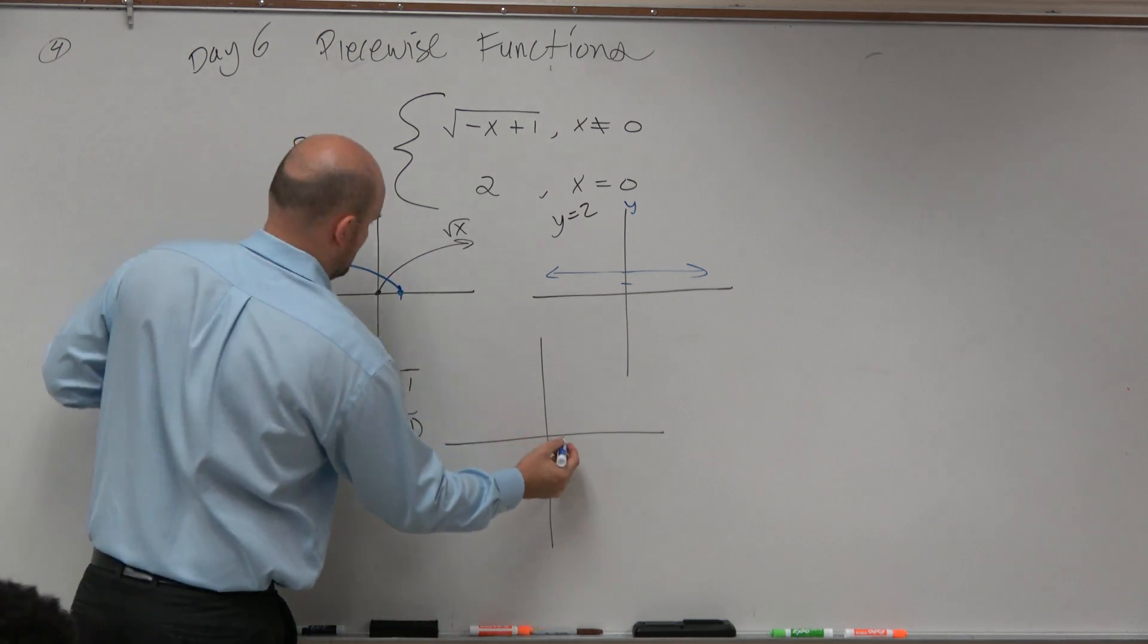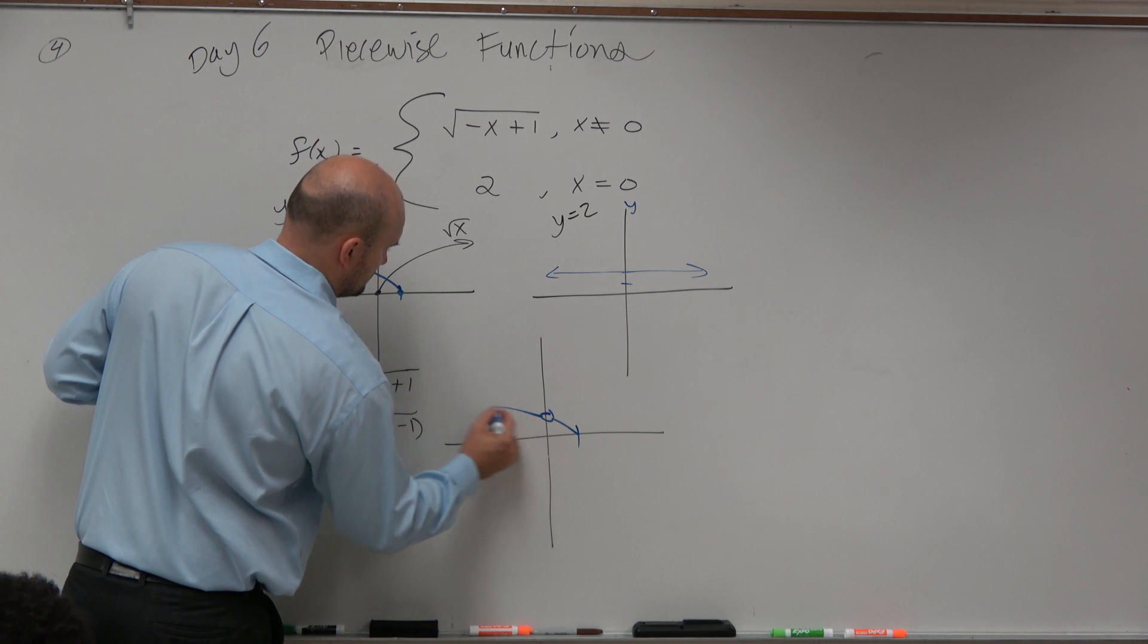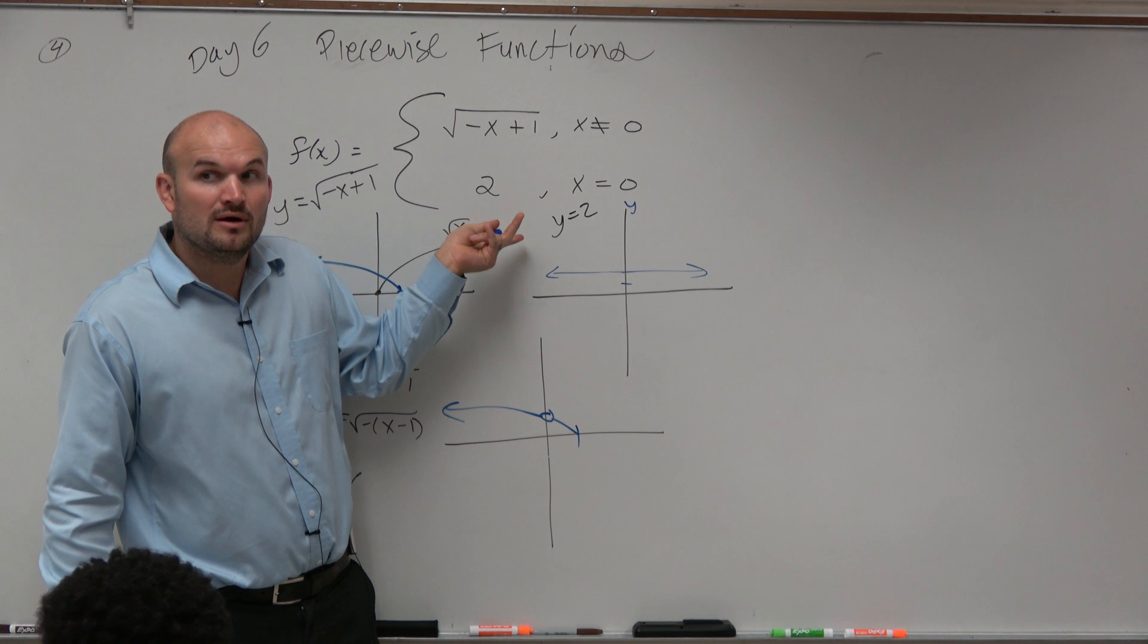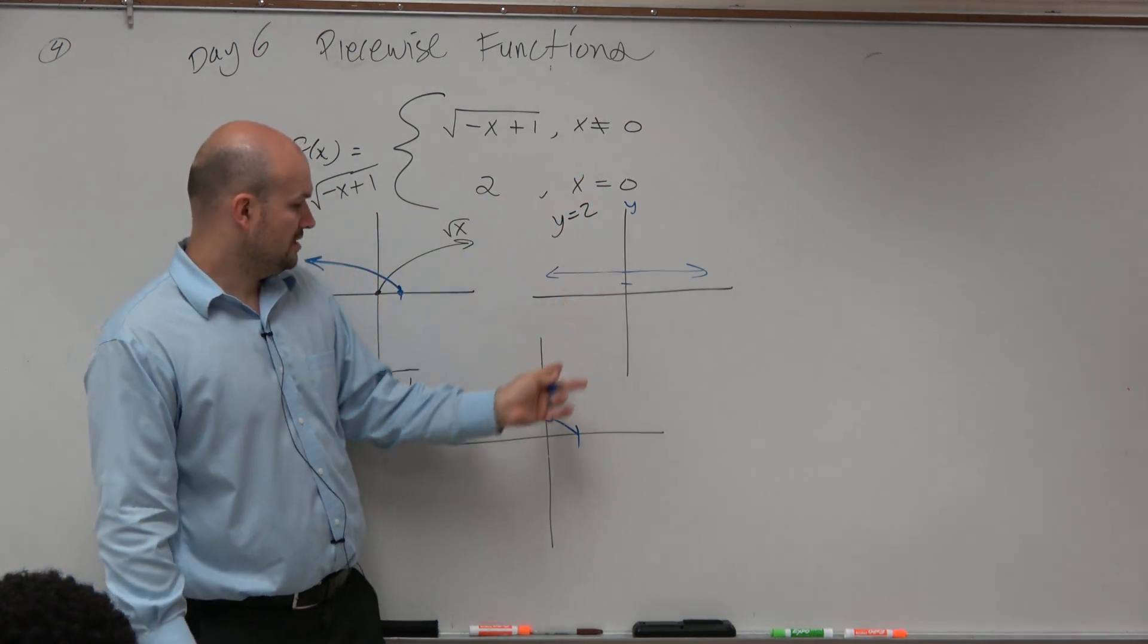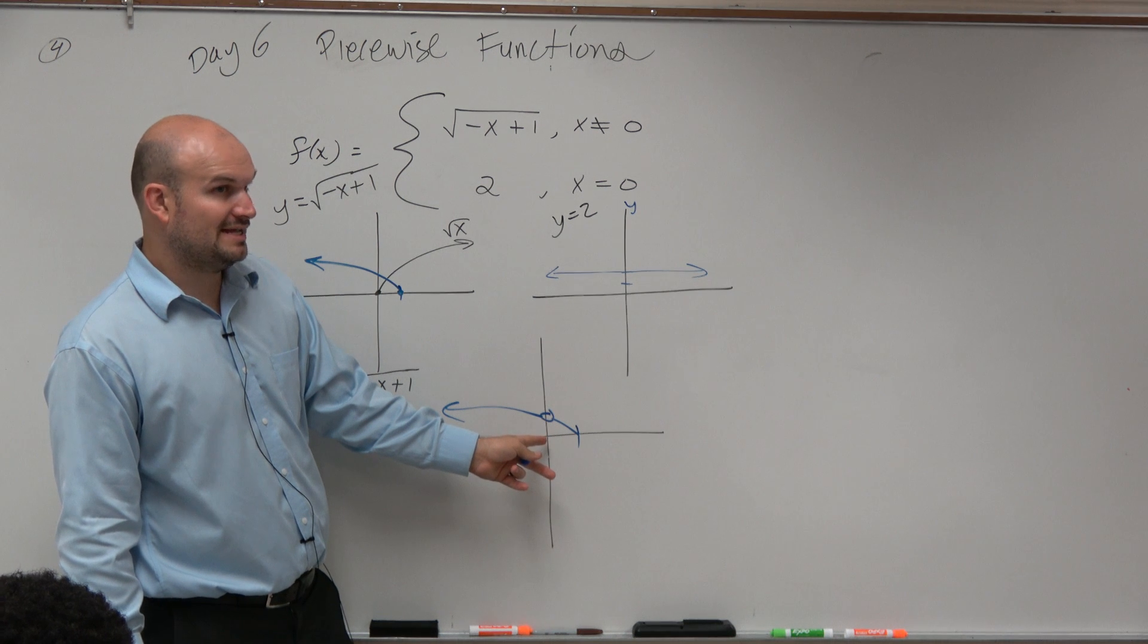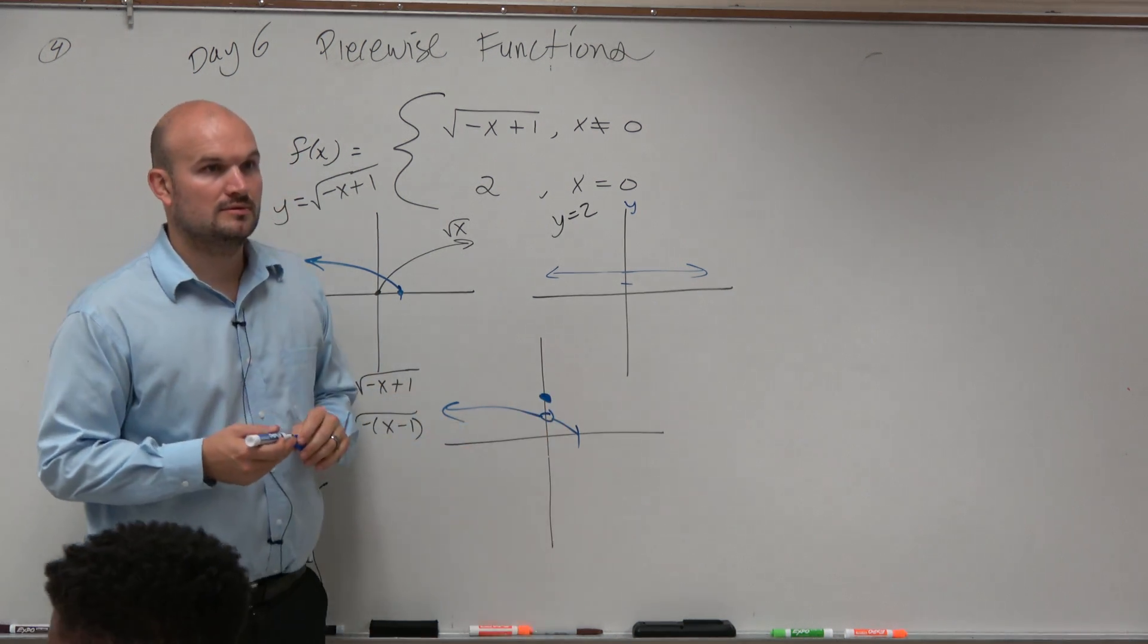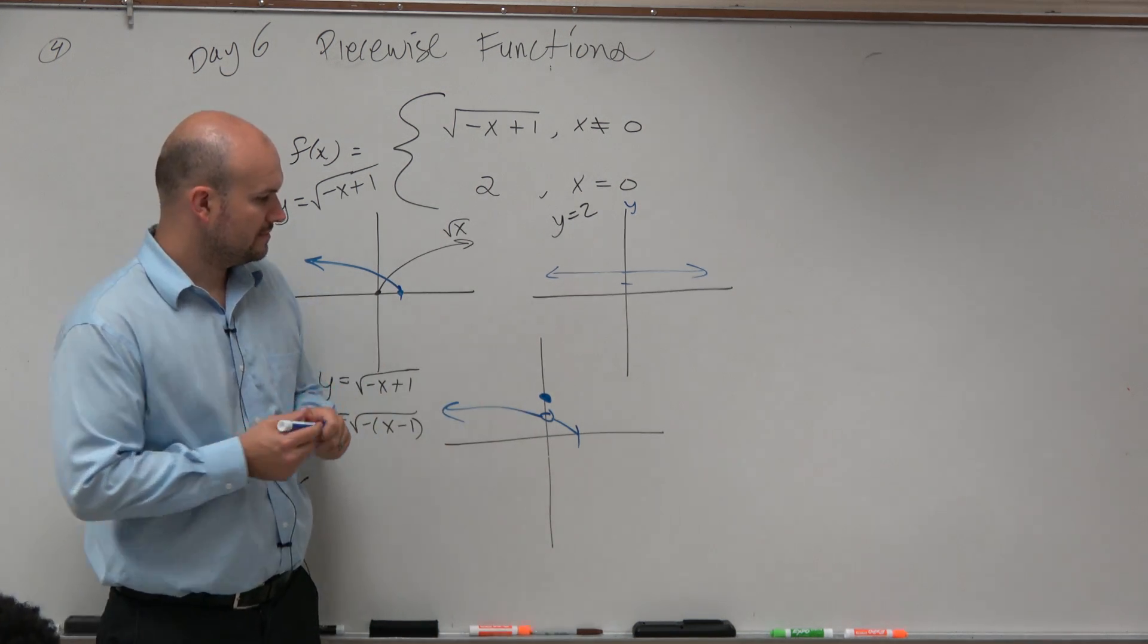So, graph it just like you did. What is it? Over 1. Put a nice little hole there. Then, it says, graph this line, 2, but only graph it at one value, when x is equal to 0. So, when x equals 0, y equals 2. So, we have a little hole, and the graph would just look like that.